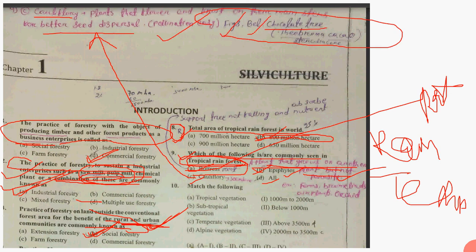An extra fact to remember: the chocolate tree's scientific name is Theobroma cacao.